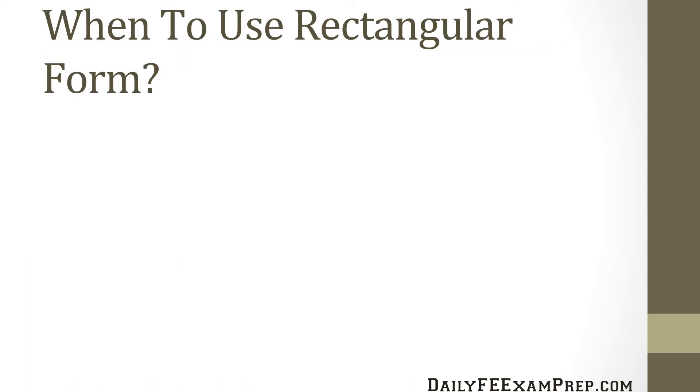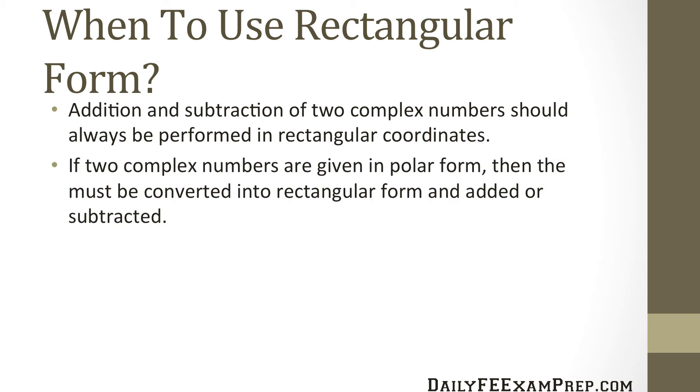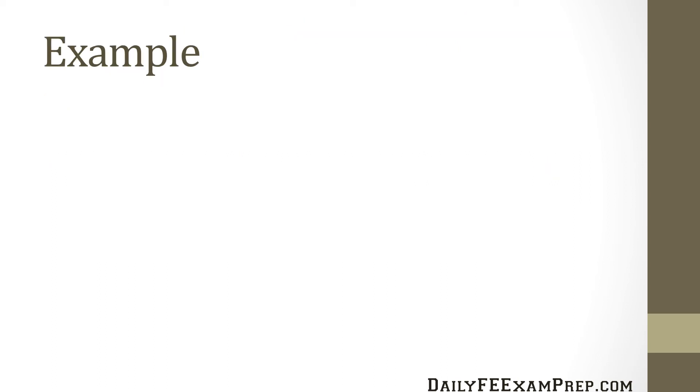So when do we use the rectangular form? Well addition and subtraction of two complex numbers should always be performed in rectangular coordinates. It's just much easier. If two complex numbers are given in polar form then they must be converted into rectangular form and added or subtracted. So let's go through an example.